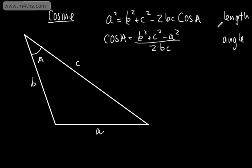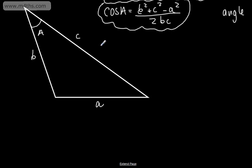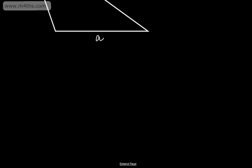This is easiest if we're finding a length. You can rearrange this to write cos A is equal to B squared plus C squared minus A squared over 2BC if you want to find an angle. If you remember the second formula, it can be slightly easier to find a missing angle. So let's have a look at this in action.